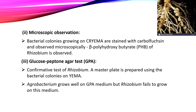The second identification method uses a microscope. Bacterial colonies grown on YEMA medium are stained with carbon fuchsin and observed microscopically to view the poly-hydroxybutyrate granules of Rhizobium. The third test is the glucose peptone agar test, which is a confirmatory test. A master plate is prepared using bacterial colonies from YEMA. Agrobacterium grows well on glucose peptone agar, but Rhizobium fails to grow on this medium.